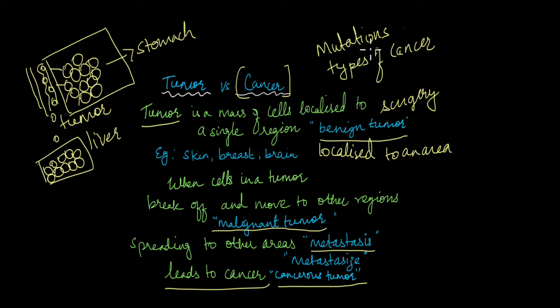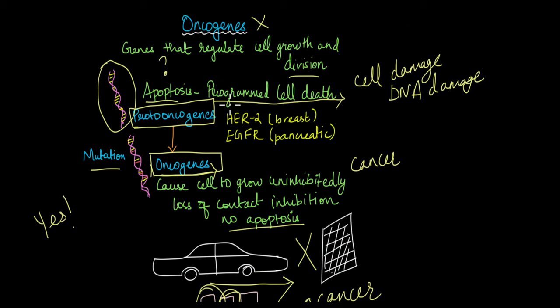Before we move on, there is something I forgot to mention in the previous video — some examples of the three main types of genes involved in cancer. Examples of oncogenes are HER2 and the EGFR genes. HER2 has been associated with a lot of types of breast cancer, and the EGFR gene has been associated with pancreatic cancer.